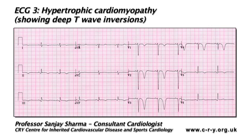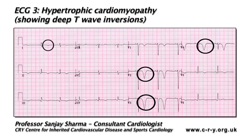This ECG shows deep T-wave inversions in leads V2, V3, and V4, and minor T-wave inversions in leads 1, 2, 3, AVF, and V5.